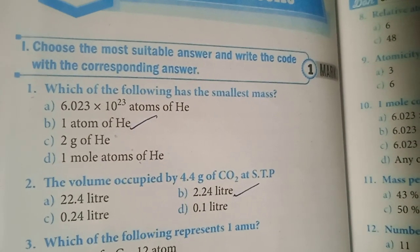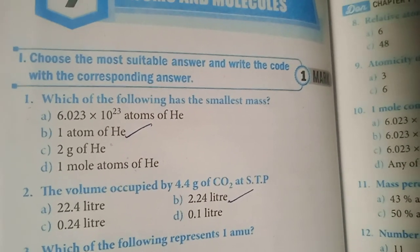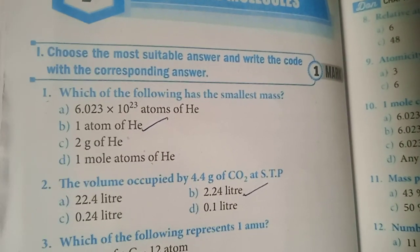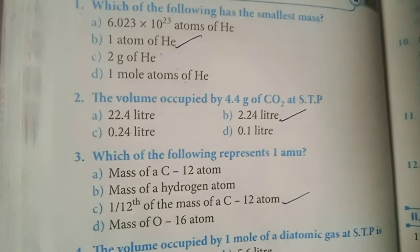Second one. The volume occupied by 4.4 gram of carbon dioxide at STP is? Option B, 2.24 liter, is the answer. Third one.